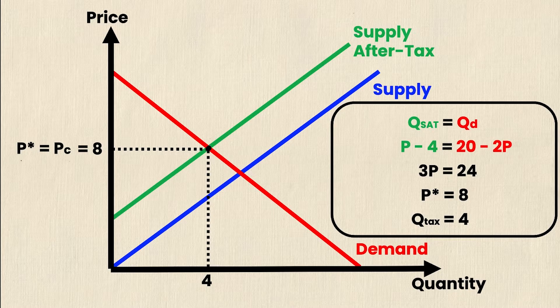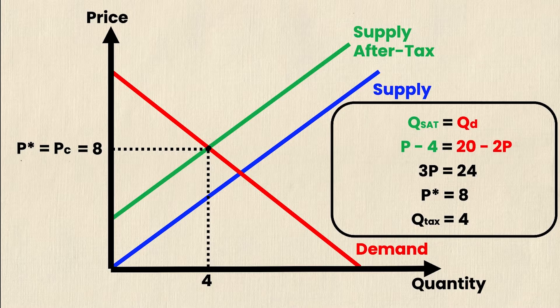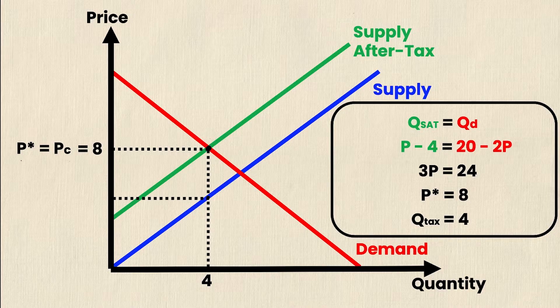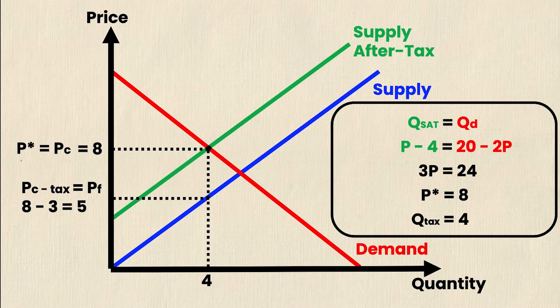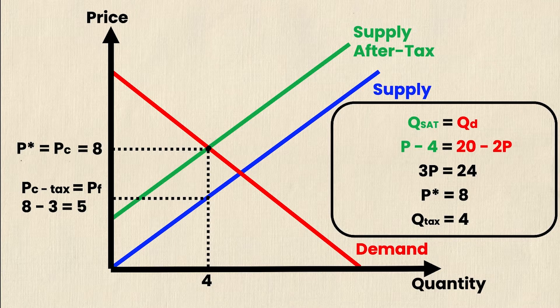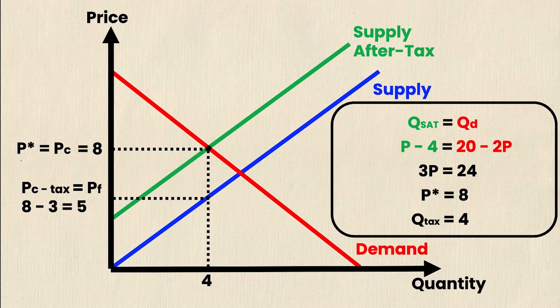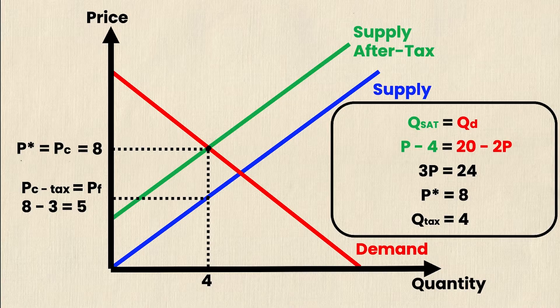However, we know there's also $3 in taxes that are being charged to the supplier. So the price that the firms actually receive will be $3 less down here. And so the equation for this point is the price that consumers pay minus the tax, which is equal to the price the firms receive. So this would be 8, which is the price that consumers pay minus 3, which is the tax. And this is obviously equal to 5. Now I can also find this by substituting 4 into the old supply equation that would give me 5 as well.